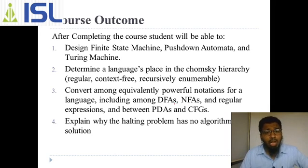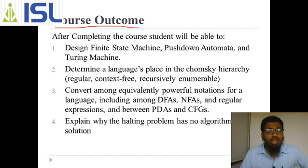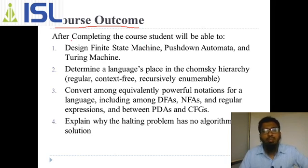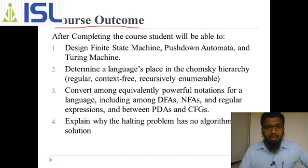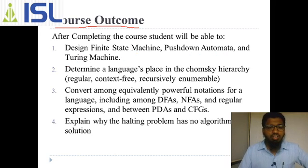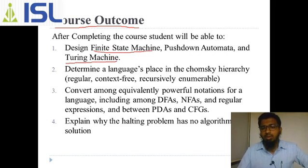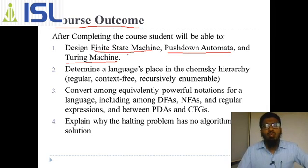Now we are going to see the course outcome — what is course outcome? This is nothing but why we are learning this, and after completing this course, what a student can be able to do. This is a very important subject, ALC, for Computer Science Engineering, because mathematical calculation is done using ALC. Important topics include designing finite state machines, automata, and Turing machines.